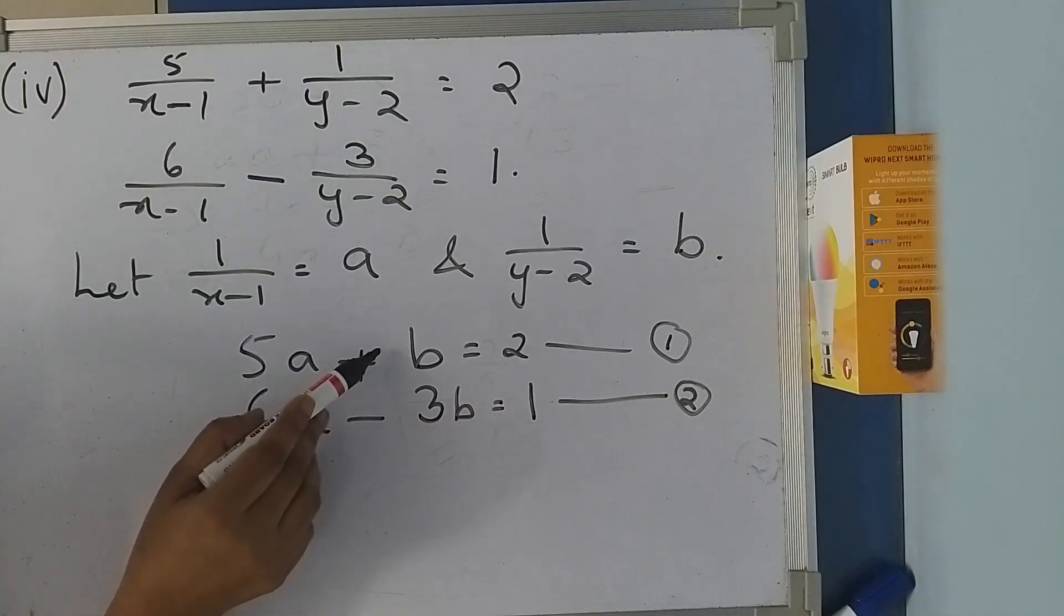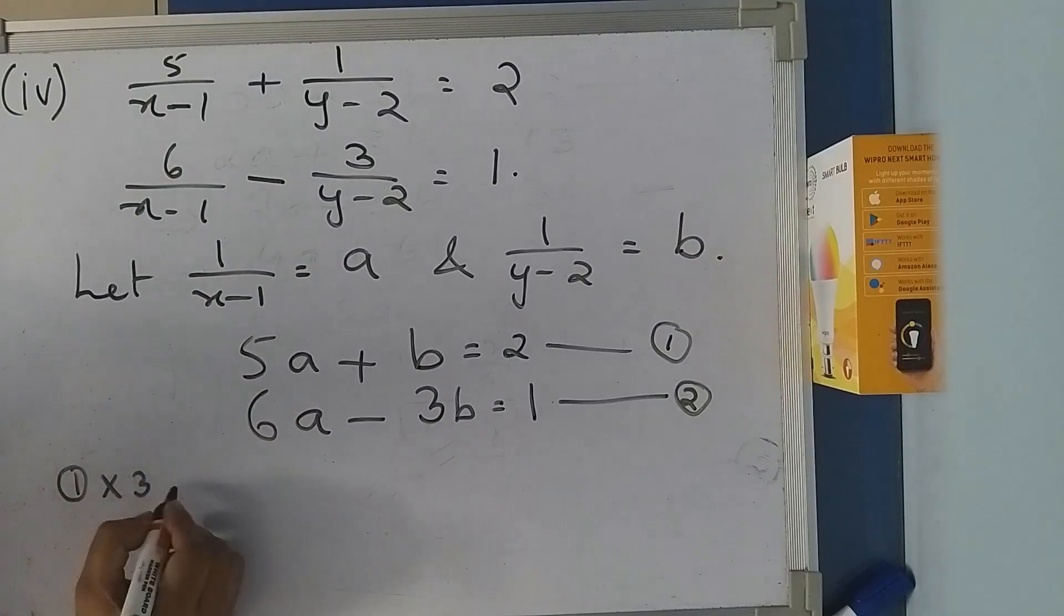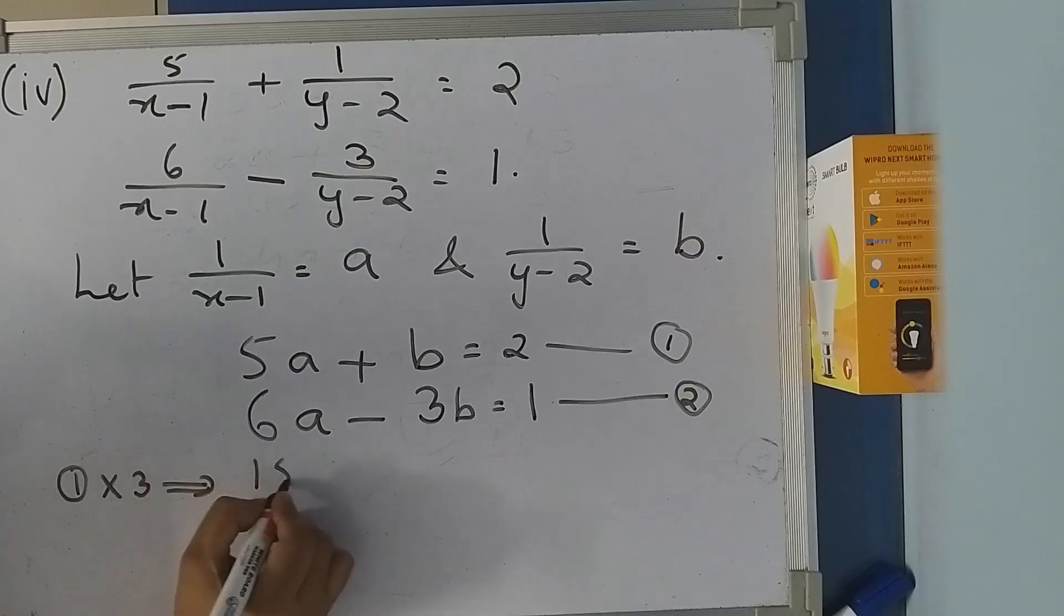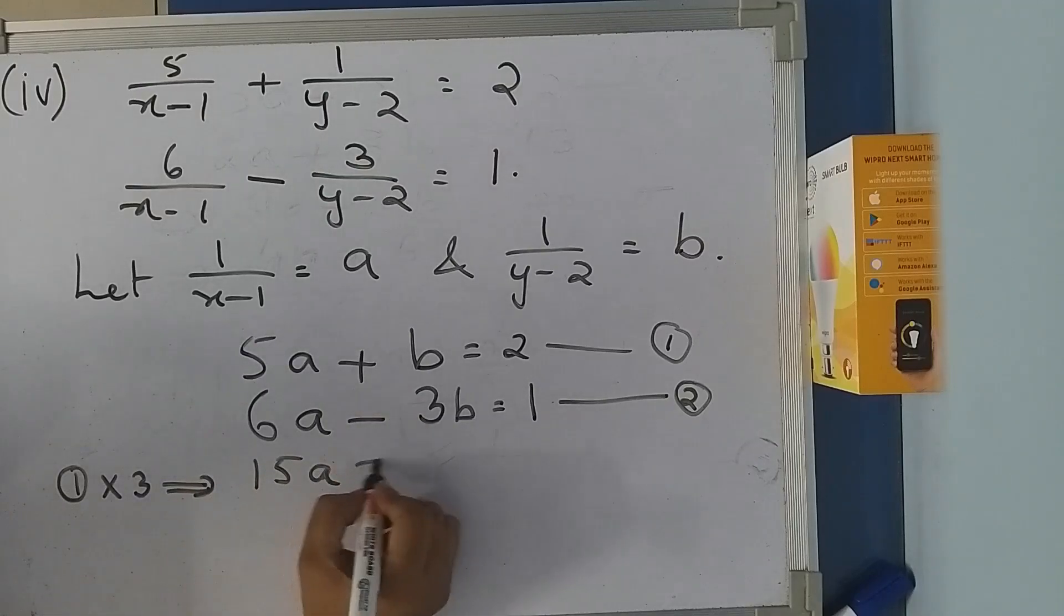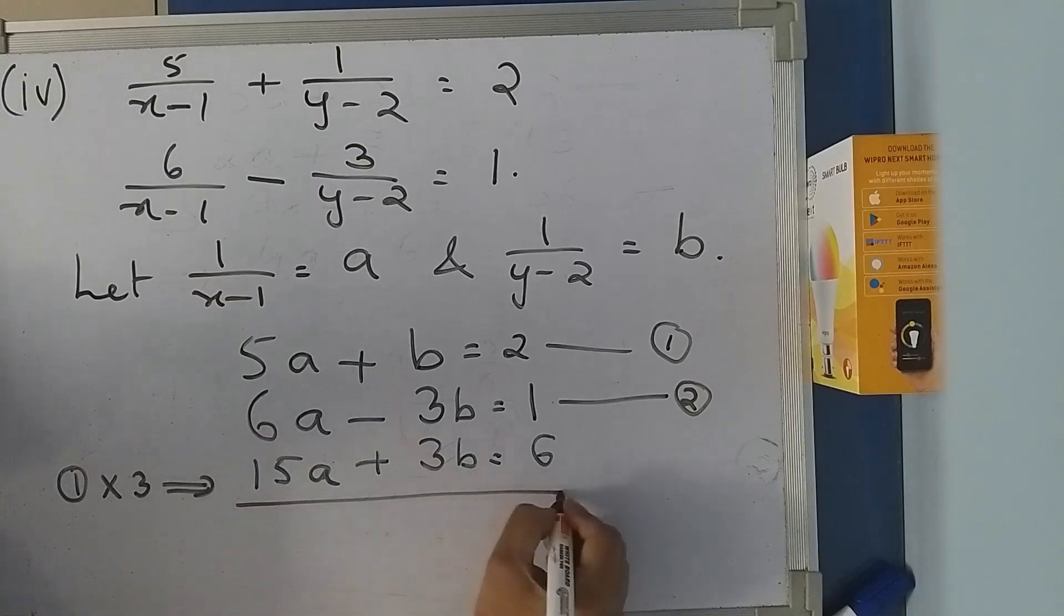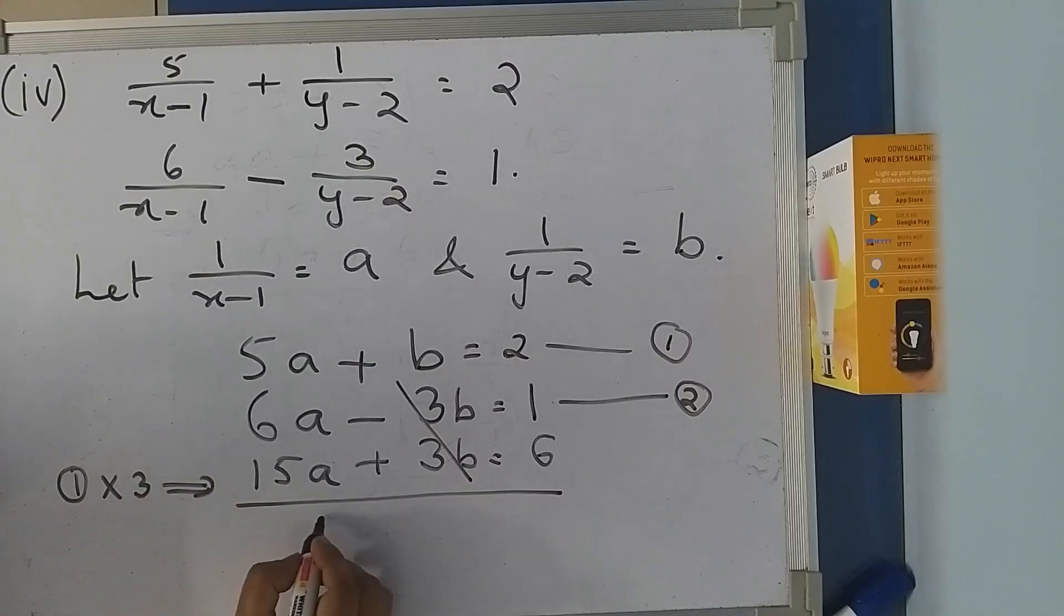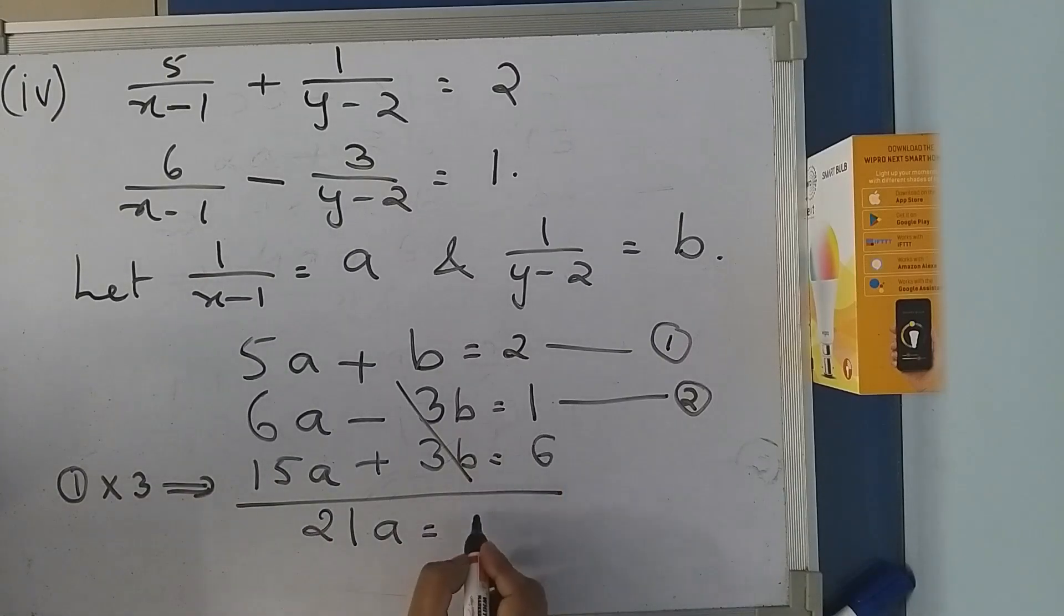Now, if you multiply the first equation by 3, I get 15A + 3B = 6. I will add it because it is +3B and -3B, this cancels. 6A + 15A is 21A, which equals 6 + 1 = 7.